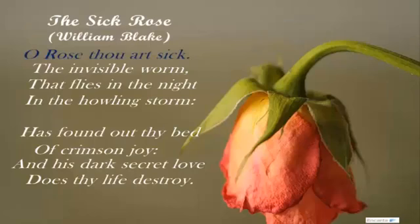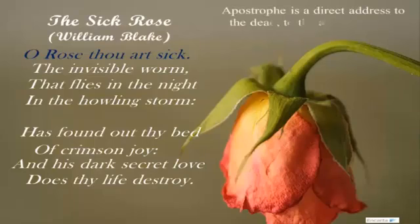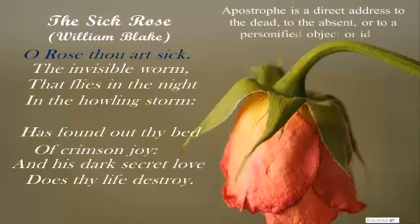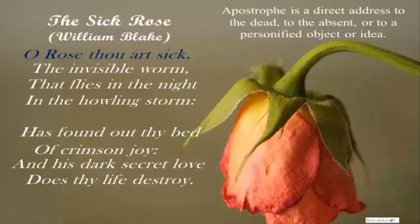The first line, 'O Rose, thou art sick,' is actually a figurative speech — specifically a figure of speech called apostrophe. Apostrophe is a direct address to the dead, the absent, or a personified object or idea. Here the poet makes an impassioned address to a rose and says 'O Rose, thou art sick.' The tone is full of pity. The rose is sick because it has been infested by a worm.